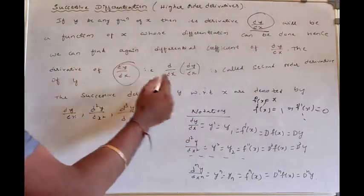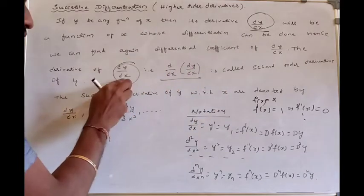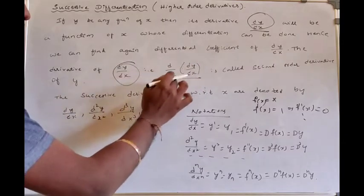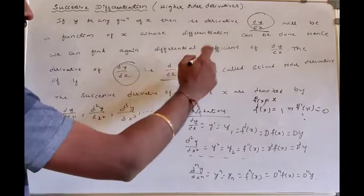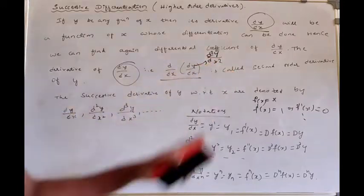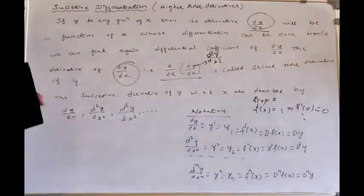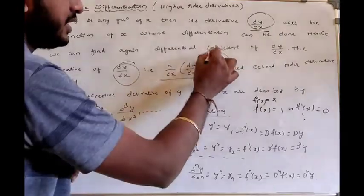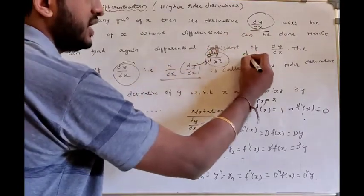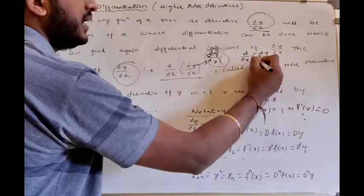The derivative of dy/dx is written as d/dx of (dy/dx), and this is called d²y/dx². This is called the second order derivative. dy/dx differentiated again gives d²y/dx², which is the second order derivative.